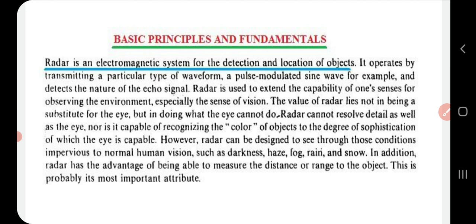However, radar can be designed to see through conditions impervious to normal human vision, such as darkness, smoke, rain, and snow. Even in worse weather conditions like darkness, haze, fog, rain, and snow, radar can detect objects, but the human eye cannot. Radar can also measure the distance or range of the object, which the human eye cannot do.